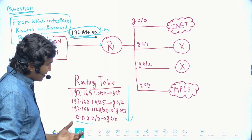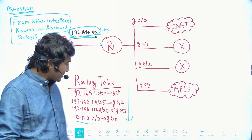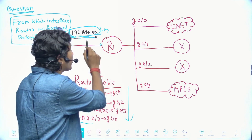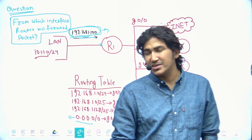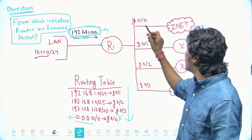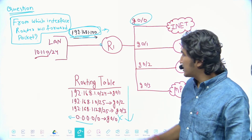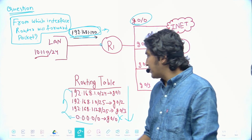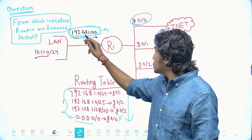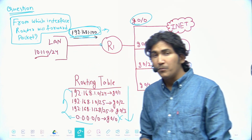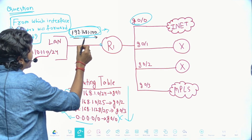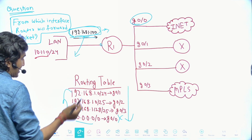For the default route, zero bits match — meaning no bits are matching. The router only uses the default route when no other match is found, so it will not forward traffic from G0/0 here. Out of the remaining three subnets, we need to find where the most prefix bits match. We convert the IP address to binary.